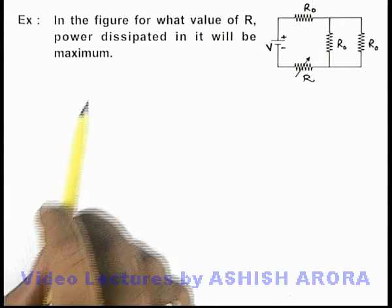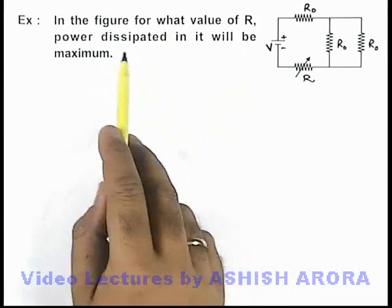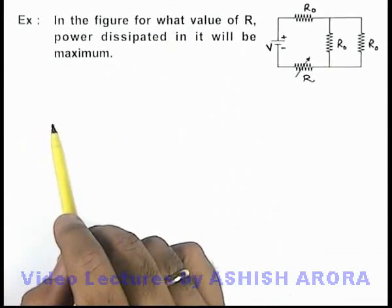In this example, in the figure shown, for what value of R, the power dissipated in it will be maximum?